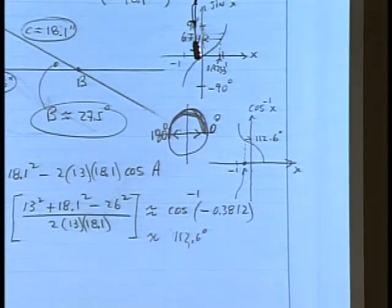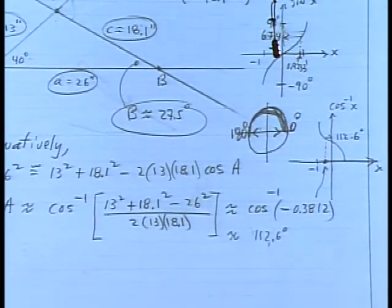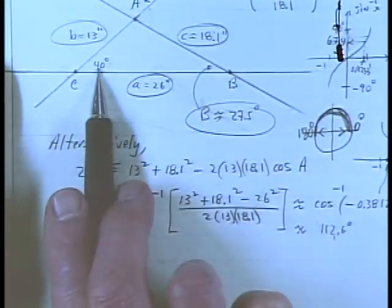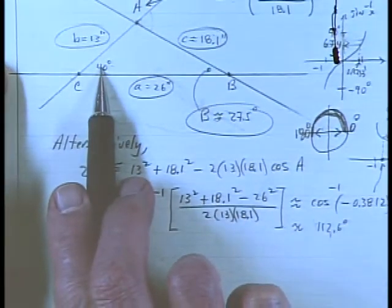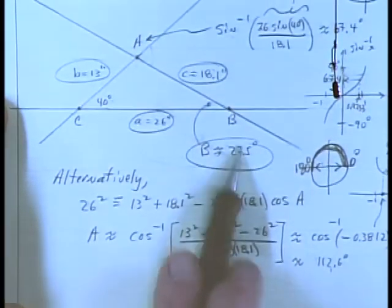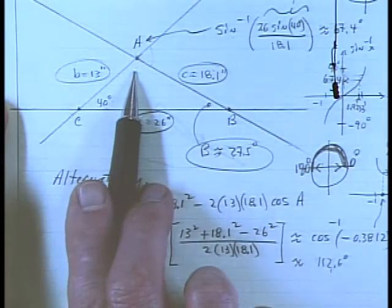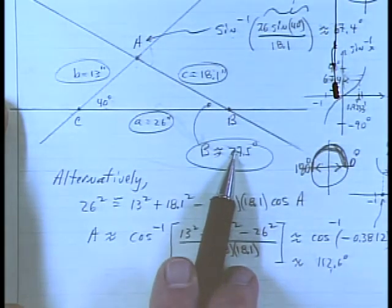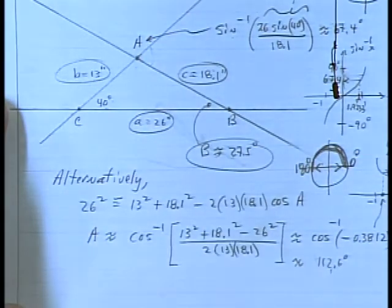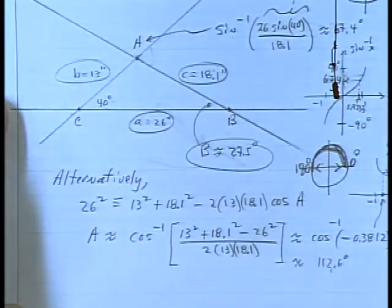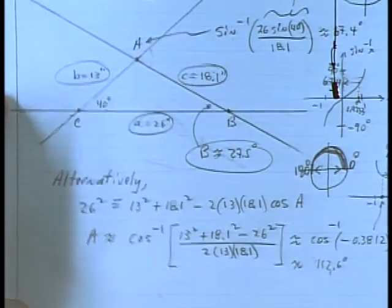If you knew the 40 degrees and were able to calculate the 27.5 degrees, you could just add those and subtract from 180 to get 112.5. There are different ways to get at it, and that's what I'm trying to impress upon you, along with the importance of drawing a sketch to tell if you're right or wrong.